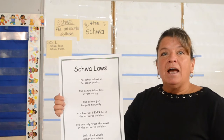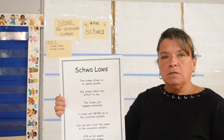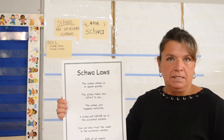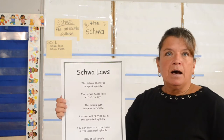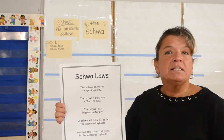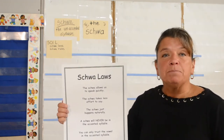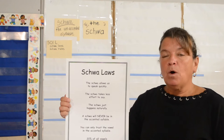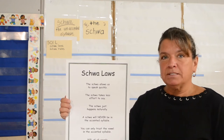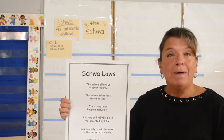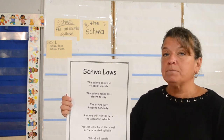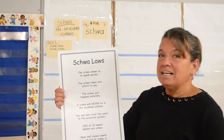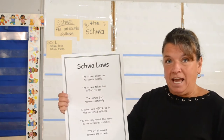When we say 'about,' the schwa makes us able to speak quicker instead of saying 'a-bout.' Go about your business — it helps us speak quicker. The schwa takes less effort to say.